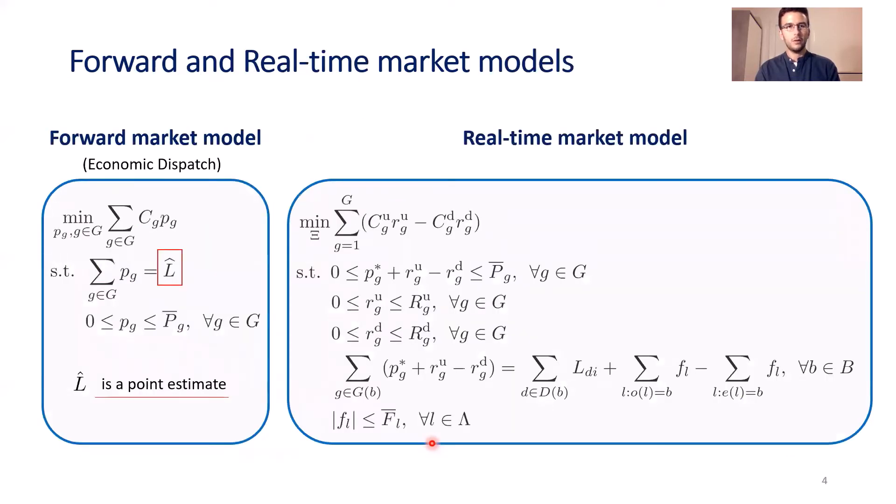The forward market model is an economic dispatch, a very simple one in which we want to minimize the total cost of energy production. P are the generation levels of generator G, and we assume a linear relationship between power and cost. We have an energy balance saying that total energy of all generators should equal a point estimate, and we enforce the generator capacity constraint.